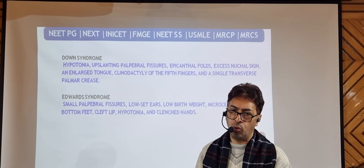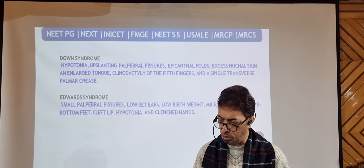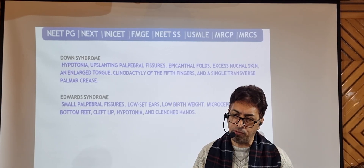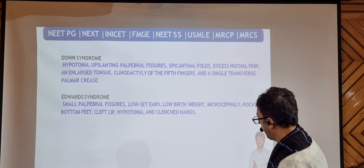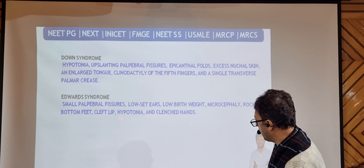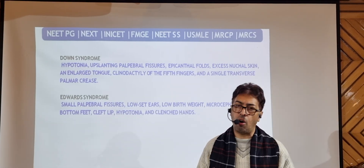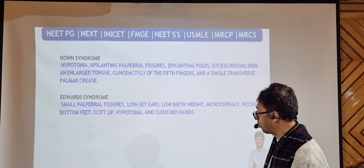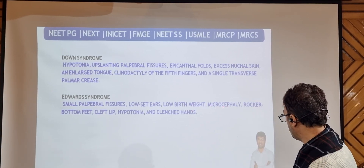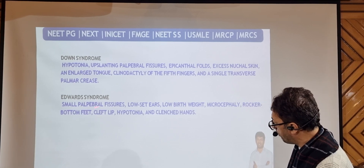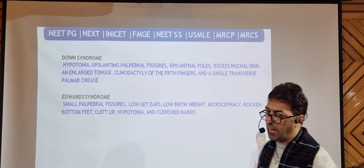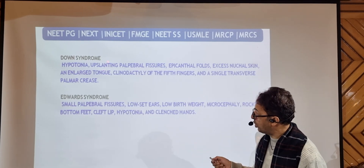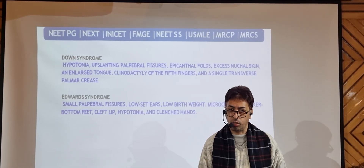We also have Edwards and Patau syndromes. Taking Edwards syndrome as an example: important features include microcephaly — a small head — small palpebral fissures, classic rocker bottom feet, hypertonia, cleft lip, low-set ears, and clenched hands. These are the orthopedic manifestations of Edwards syndrome. The classic rocker bottom feet is the cache point. This distinguishes Edwards syndrome from Down syndrome — you have to know how to differentiate between them.